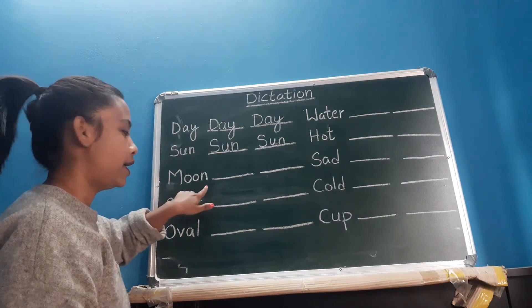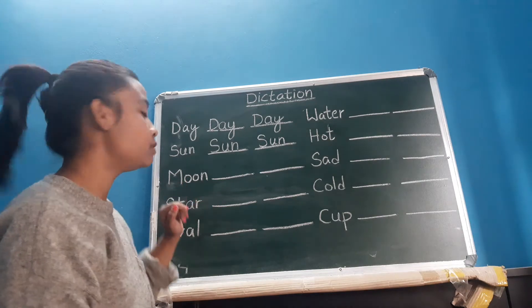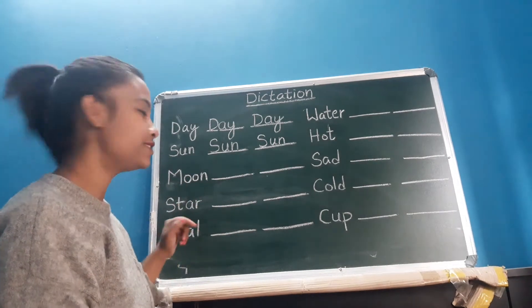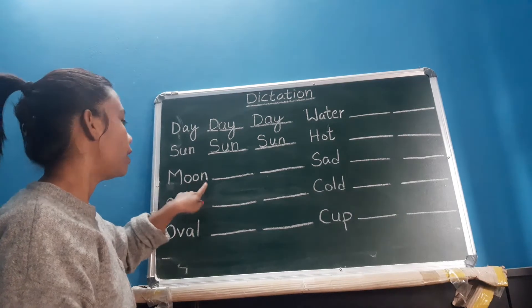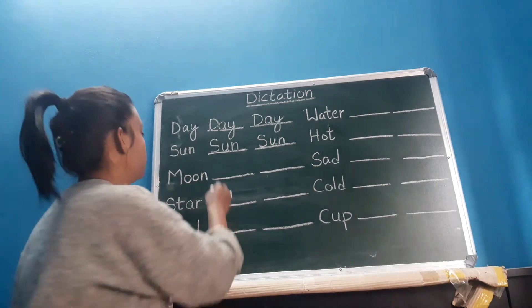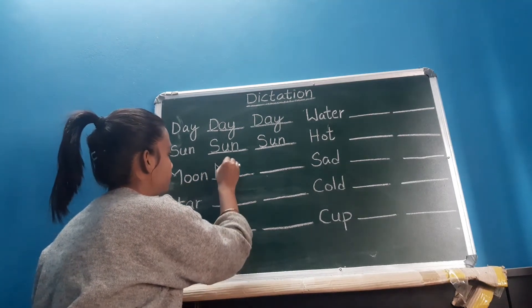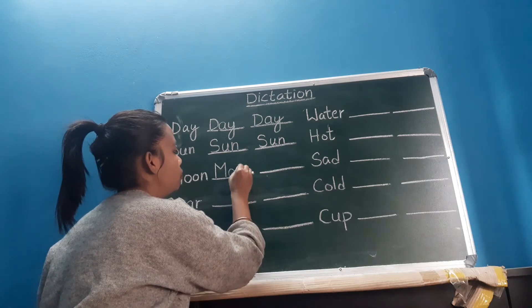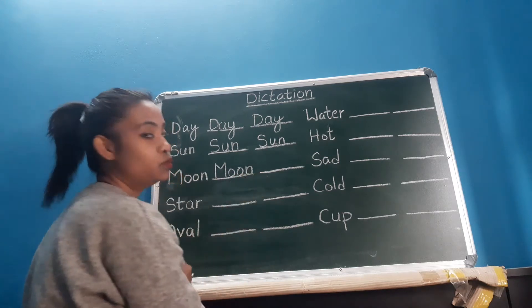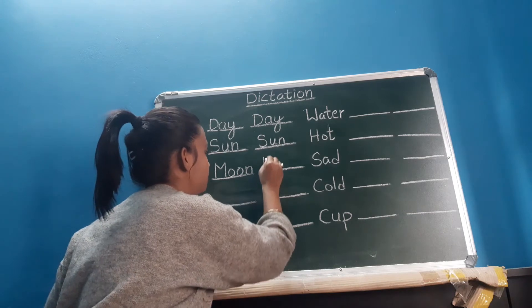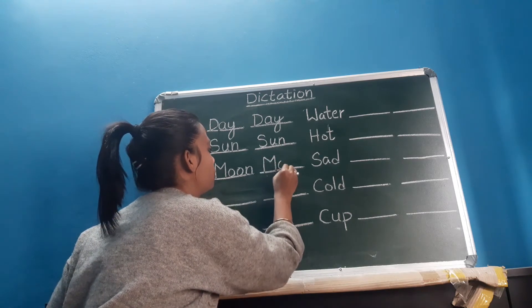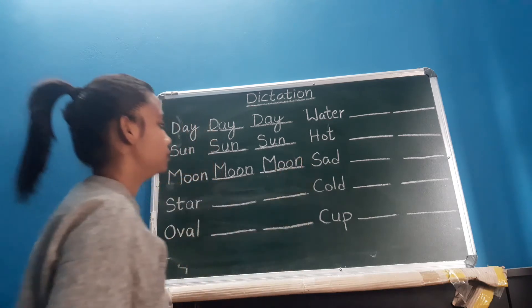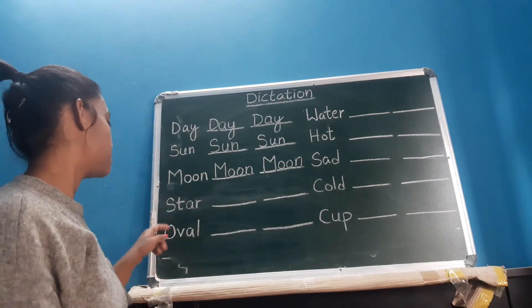Next word: M, O, O, N — moon. When do we see the moon? At night, yes, at night. M, O, O, N — moon. M, O, O, N — moon. Again, M, O, O, N — moon. All right?